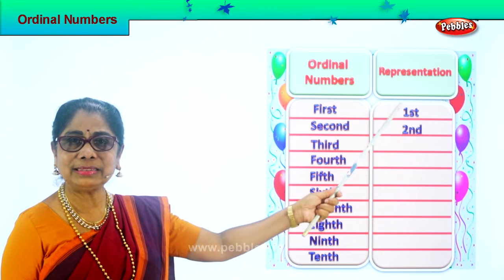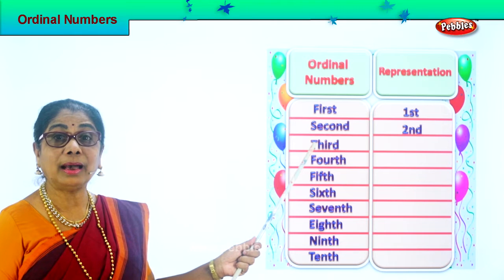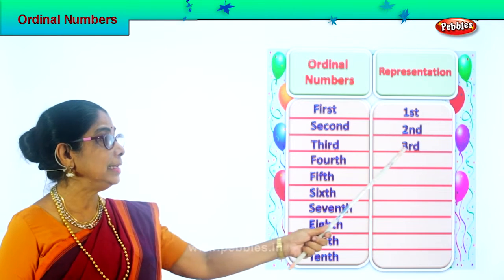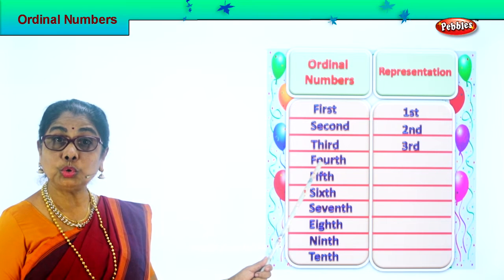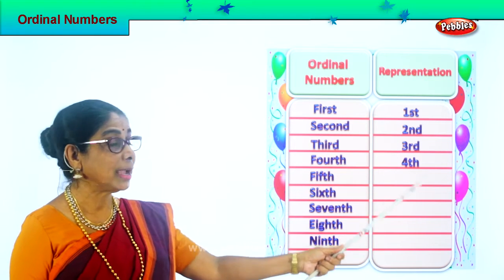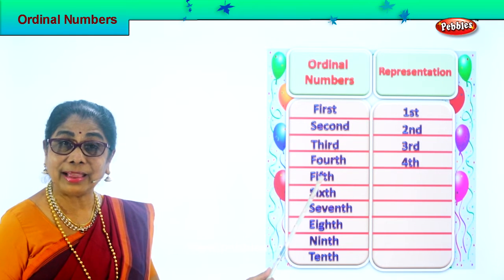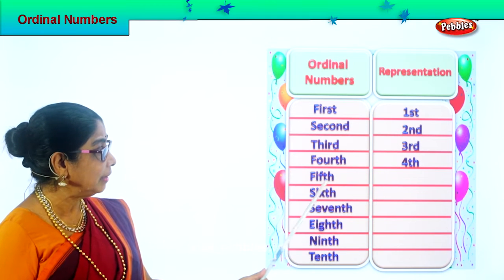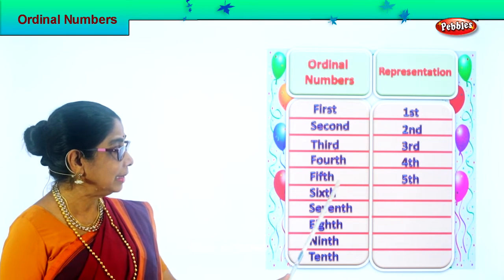So you read 1st as first, 2nd as second. Let's look at the third. Spell third: T-H-I-R-D. How do you represent third? Put number 3 and write R-D next to it: 3rd. Now look at the fourth spelling: F-O-U-R-T-H. How do you represent fourth? Put 4 and put TH at the side: 4th. Spell fifth: F-I-F-T-H. And how do you represent fifth? Put number 5 and put TH: 5th.